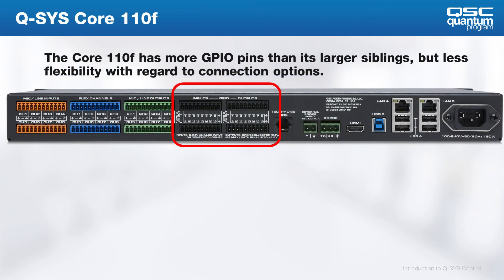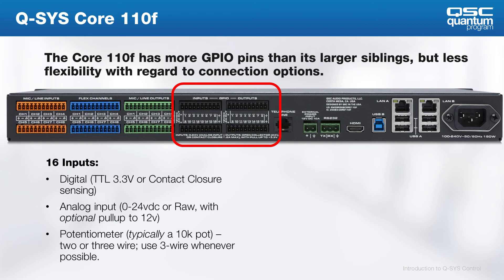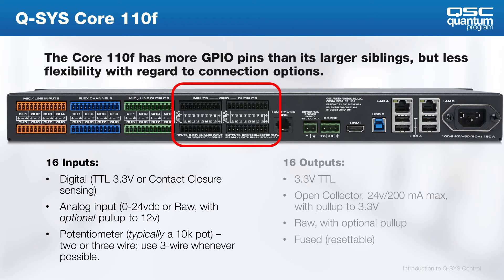If you look at the Core 110F, you'll find that it's much easier to connect using the Phoenix connector. On the back you'll find the 12-volt connections, ground, and 16 GPIO inputs and 16 outputs. These connections can be configured for digital, analog, or potentiometer connections, and there is also a raw mode that we're going to talk about a little bit later.